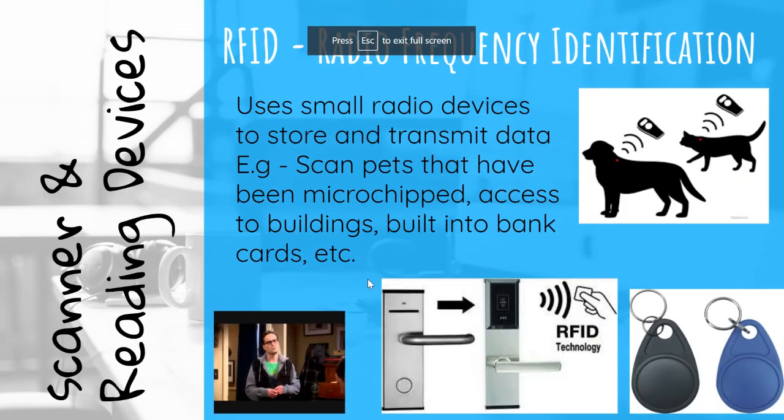RFID — Radio Frequency Identification: Uses small radio devices to store and transmit data. For example, you can have your pets microchipped, and if they get lost and someone takes them to a vet, they can scan the chip and access data such as the animal's address and the owner's contact details. RFID can also control access to buildings and is built into bank cards — it is a very useful technology.